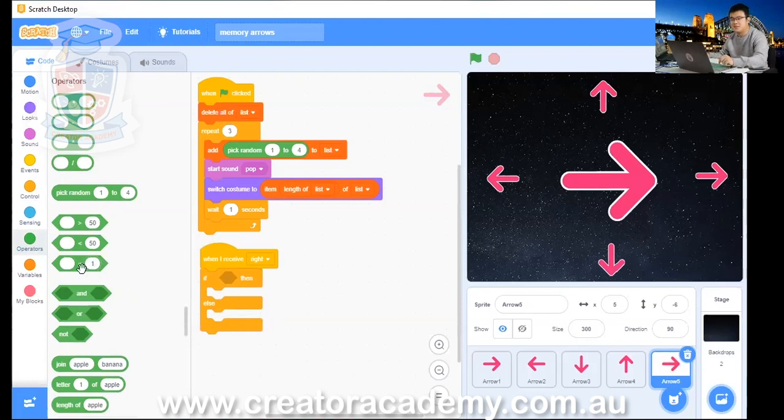We change it to one, down here, this pointy one. Something is equal to one. Check if something is equal to one. And then we drag it into the if statement.